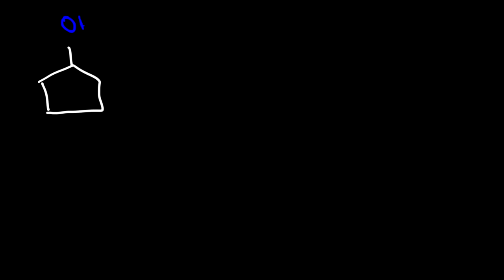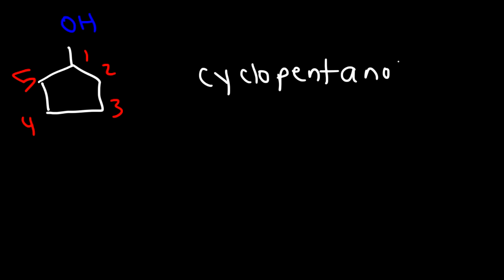Now, what if we have an alcohol on a ring? We have a cyclopentane ring because there are five carbon atoms in total. We don't have to say 1-cyclopentanol or number it — we can simply say cyclopentanol, because there's only one substituent on the ring, so it's automatically on carbon one.